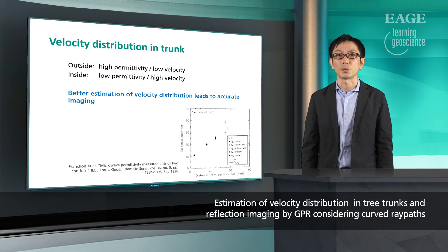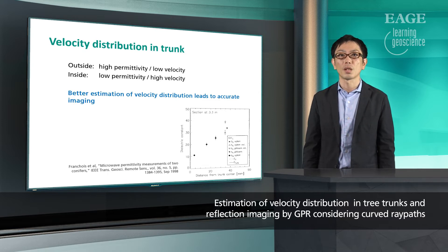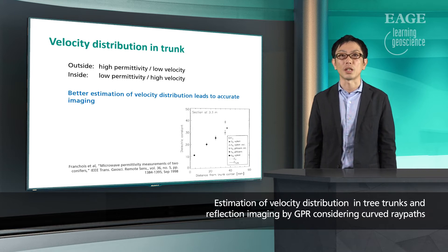A previous work directly measured the permittivity of a living tree, and the result looks like this. In this figure, horizontal axis is the distance from the tree trunk center, and vertical axis is permittivity. It shows a clear increase of permittivity, and this is what we try to estimate for accurate imaging.